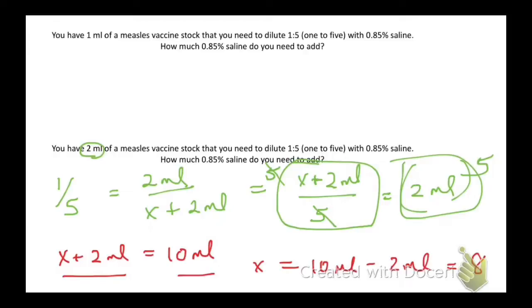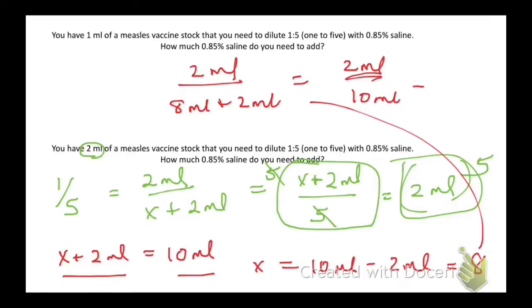Let's go back and check that. I have 2 mils plus 8 mils equals 10. 2 mils divided by 10 equals, when I reduce that, 1 to 5, so my dilution is correct.